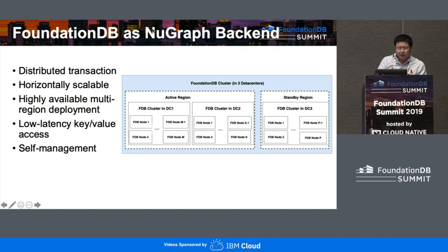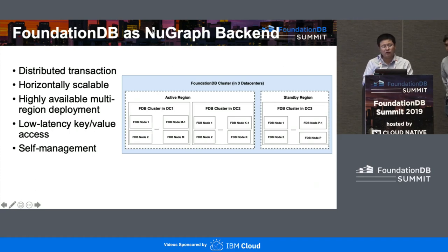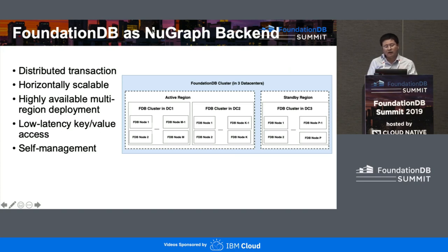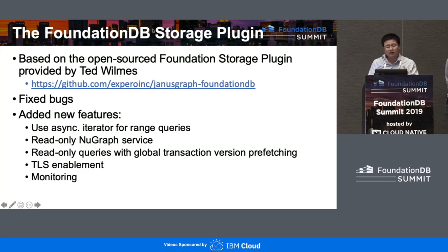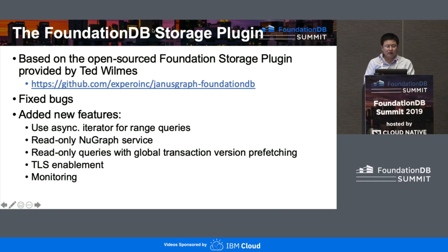We chose FoundationDB as our new backend because it provides distributed cross-shard transactions. In addition, it has horizontal scalability, cross-region, high availability, low latency, key-value store assets, and intelligent safe management. This diagram shows how we deploy our cluster in a Kubernetes environment — three clusters: DC1, DC2 from the active region, and DC3 from the standby region. Our FoundationDB storage plugin is based on the one provided by TechWimits, who also presented a JanusGraph FoundationDB plugin at last year's FoundationDB Summit. We took that plugin, fixed bugs, and added new features including async iterator, read-only NewGraph services, and read-only query optimization across data centers.